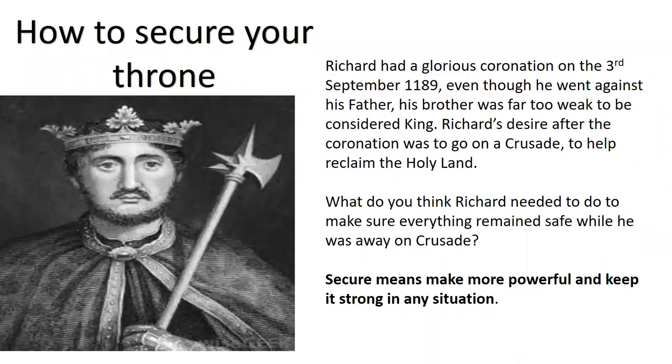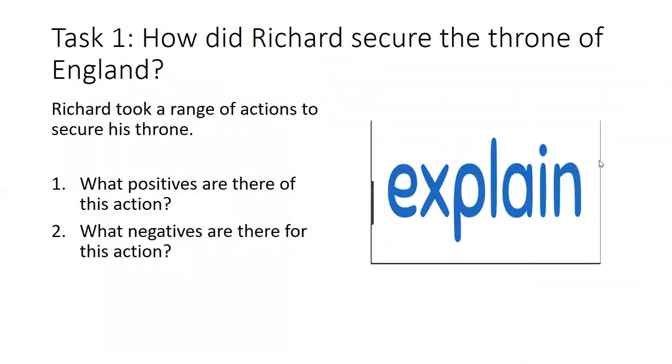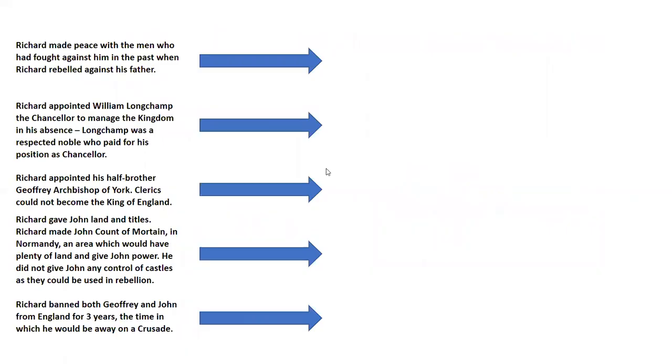Now this did come up in an exam last year in 2019. This came up and the question was, explain how Richard was able to secure his throne. Now remember, if it's an explain question, you need three paragraphs and you need to try and get three lots of evidence explained. If you can't, two is okay. One is risky just in case it's wrong. So what can Richard do to secure his throne? I'm going to read through a range of actions that Richard did and you need to consider what are the positives of his actions, what are the negatives of his actions. Now again, you can follow the video and make notes as you go, or you can pause it here now and make notes before we start. Okay, so first thing, Richard made peace with the men who fought against him in the past when Richard rebelled against his father.